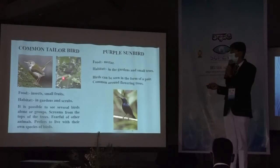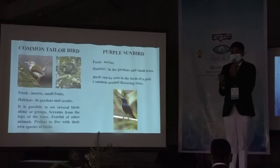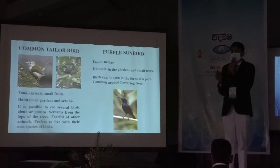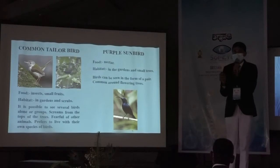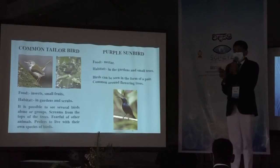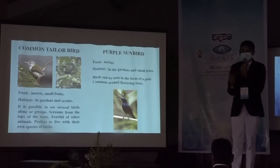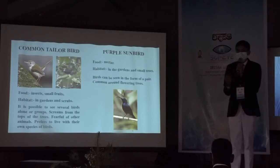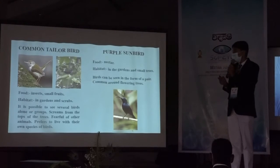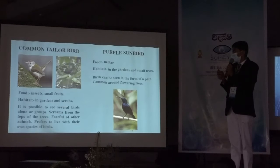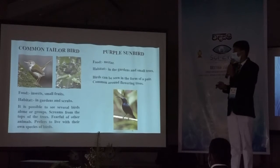The next bird is the common tailor bird, known as Batitja. It is an extremely small bird. These birds like to eat insects and small fruits, and can be seen in small gardens. I observed that these birds scream from the tops of trees, and they are mostly seen with their peers.